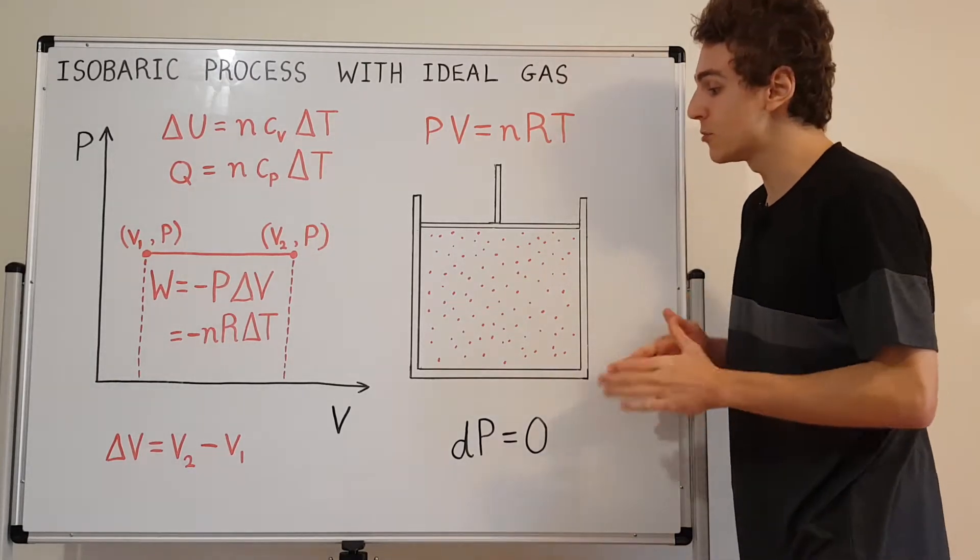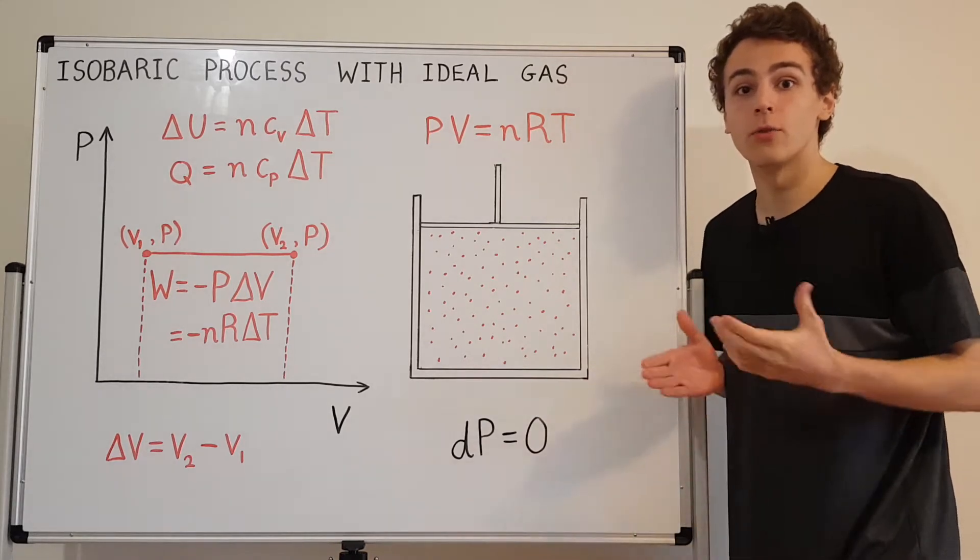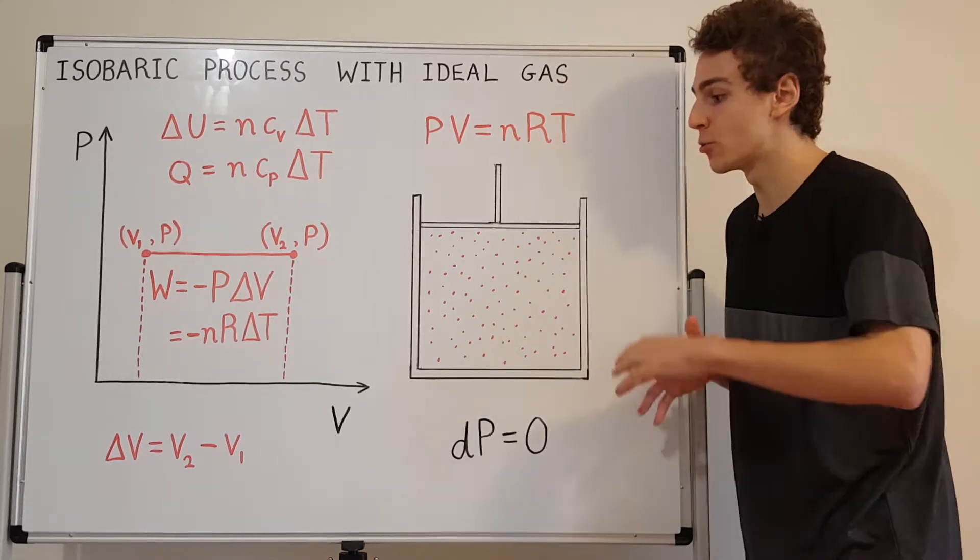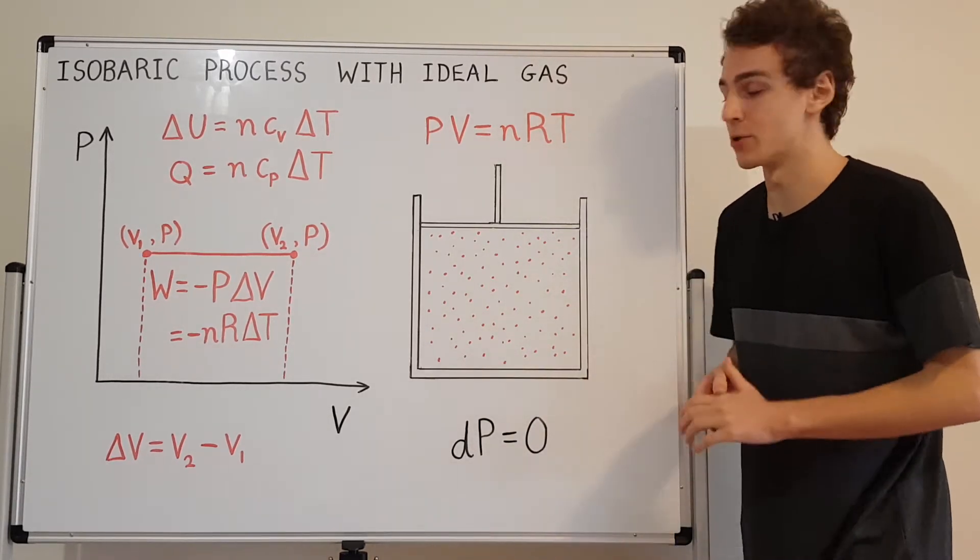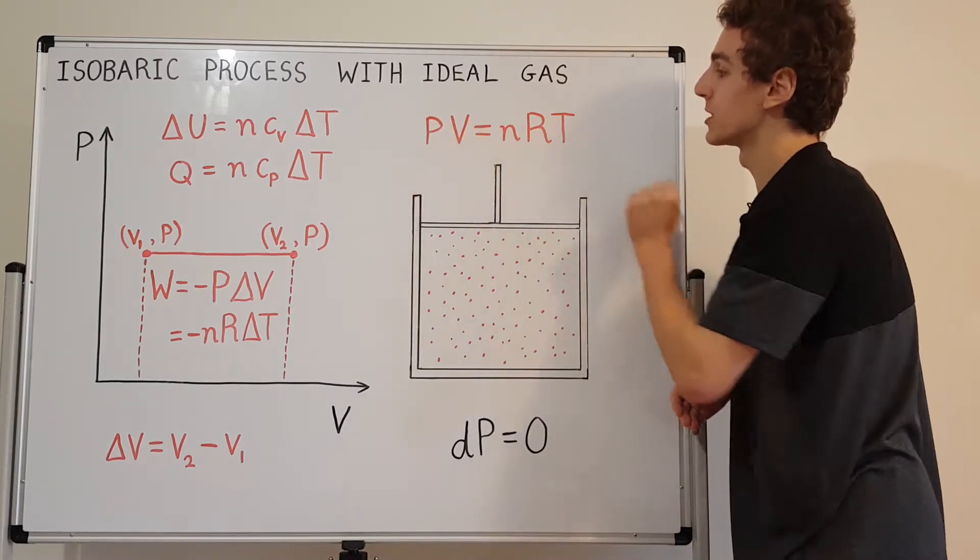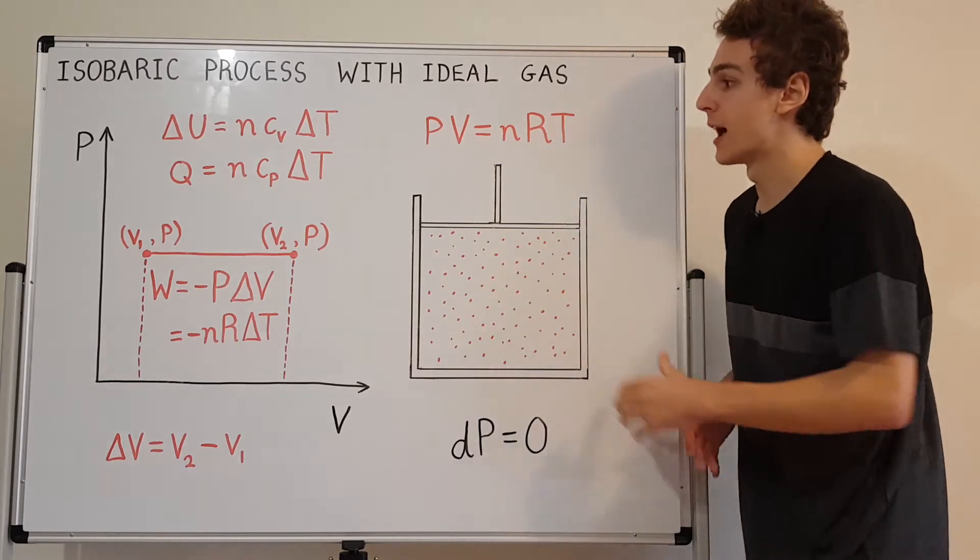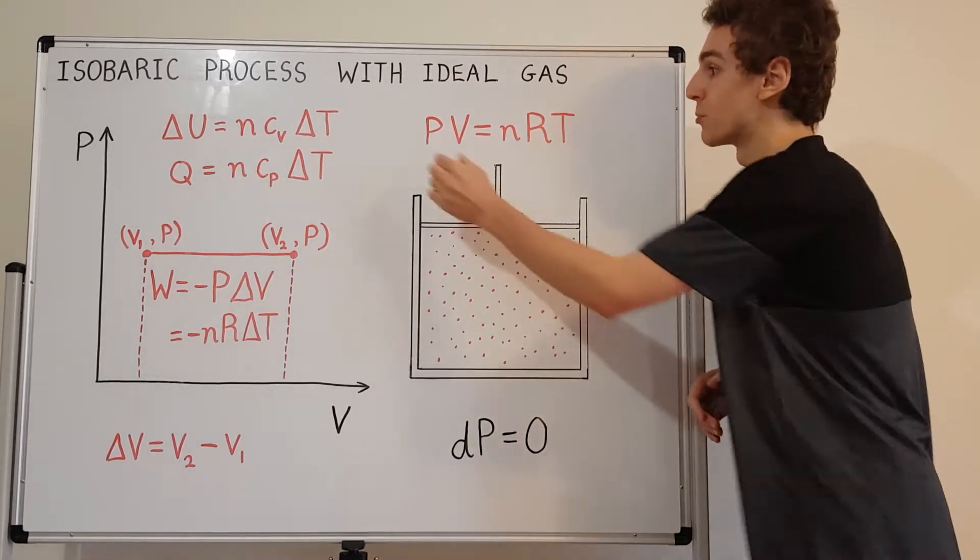We're also going to assume that this is an ideal gas. That's actually a very reasonable model for most gases under reasonable pressures and temperatures. So this over here is the ideal gas law, PV equals nRT. That's the relationship between all of these state variables that we can measure at a macroscopic level. So pressure, that's the constant variable in this process.